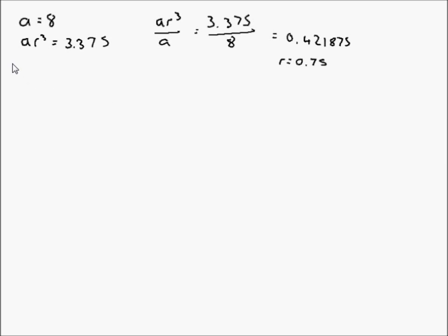Therefore the sum to infinity is equal to 8 over 1 minus 0.75, which equals 8 over 0.25, and that's equal to 32.